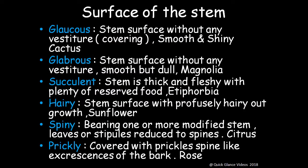Classification on the basis of surface of the stem: glaucous stems have a surface without any covering — smooth and shiny, like cactus. They are often waxy, which prevents water from resting on the surface and causes the water to slip off.